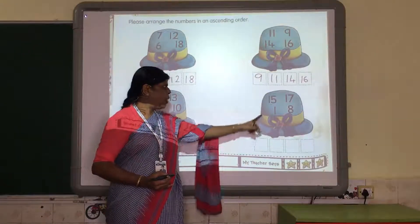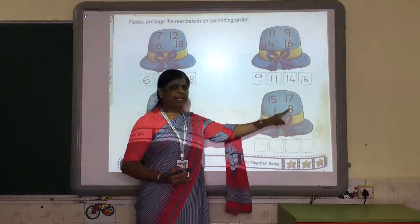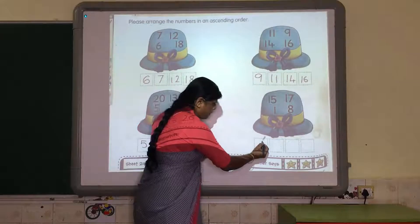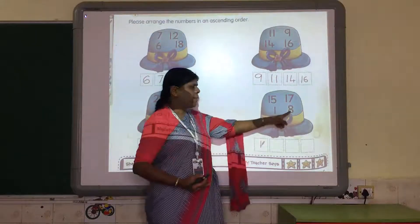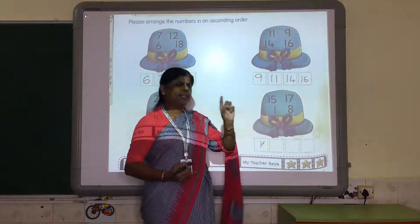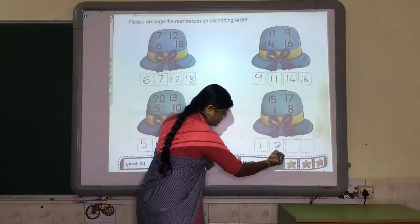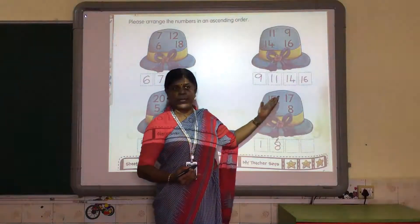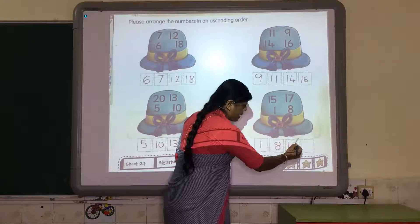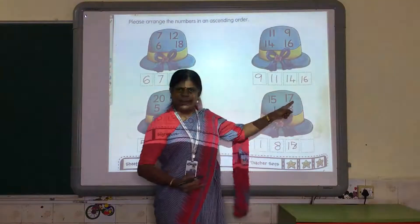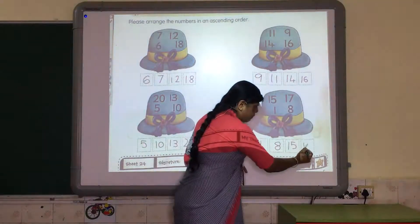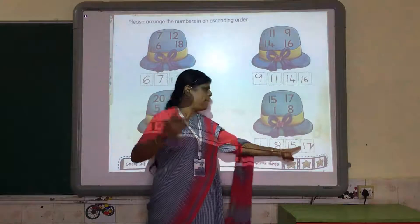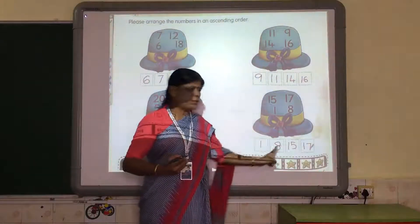Now: 1, 15, 17, 8. Which number will be first? First number will be 1. Second, among the remaining three, which is the smallest? 8. After 8, which comes — 15, 16, or 17? 15 comes first, then 17. So this block goes from the smallest number to the biggest number.